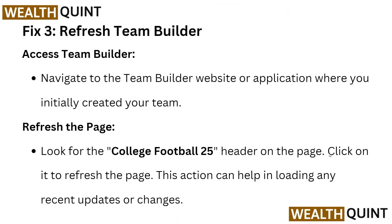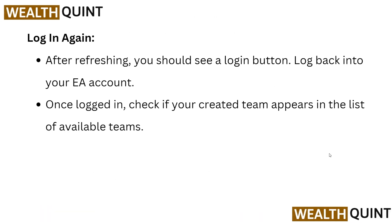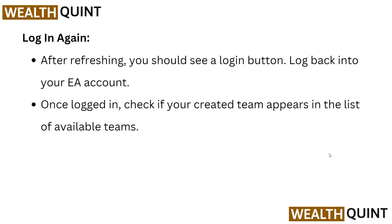The third fix is to refresh your team builder. Navigate to the team builder website or application where you initially created your team. Look for the College Football 25 header on the page and click refresh. This action can trigger loading of any recent updates or changes. After refreshing, you should see a login button — log back into your EA account and check if your created team appears in the list of available teams.